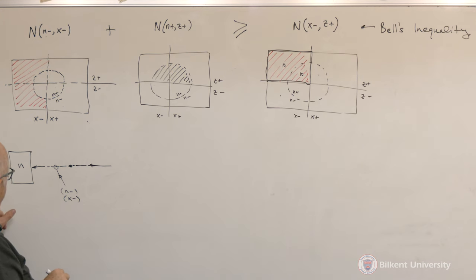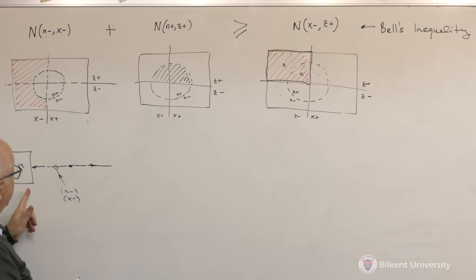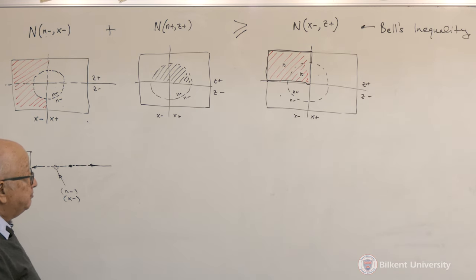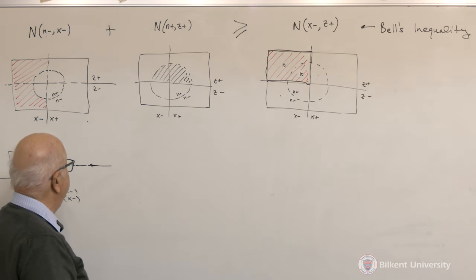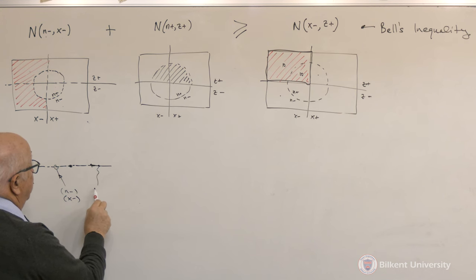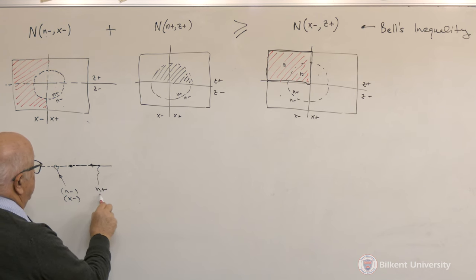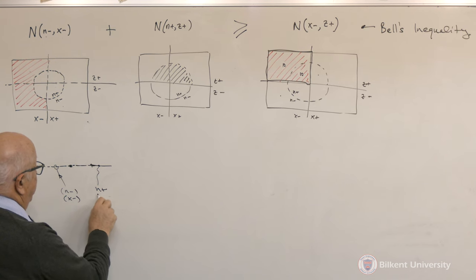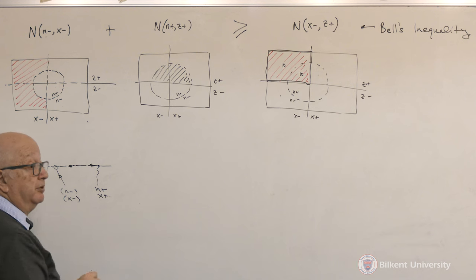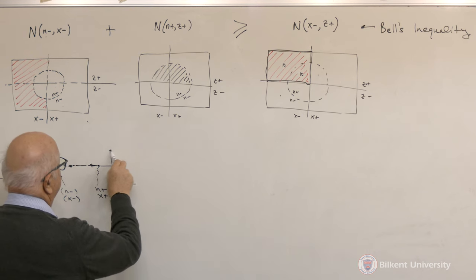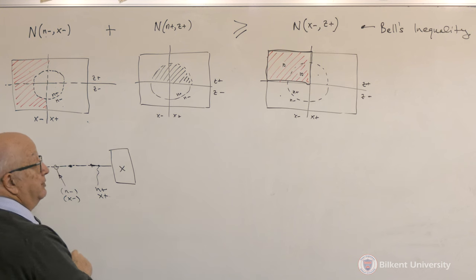Unfortunately I cannot make an x measurement on the left-hand side. But I know that if this hidden variable theory is correct, then the particle that's flying in the other direction must be n-plus and x-plus — it's going to have the opposite properties. So now over here I can measure the x property.